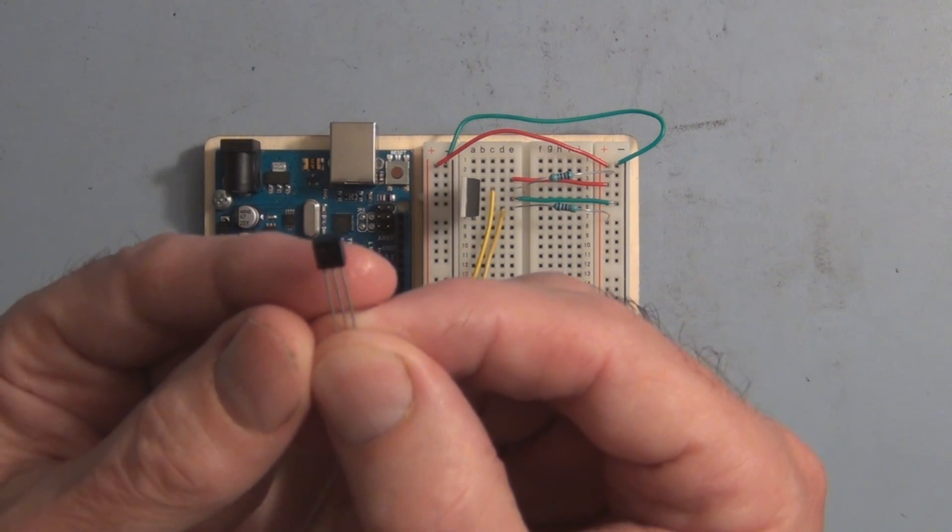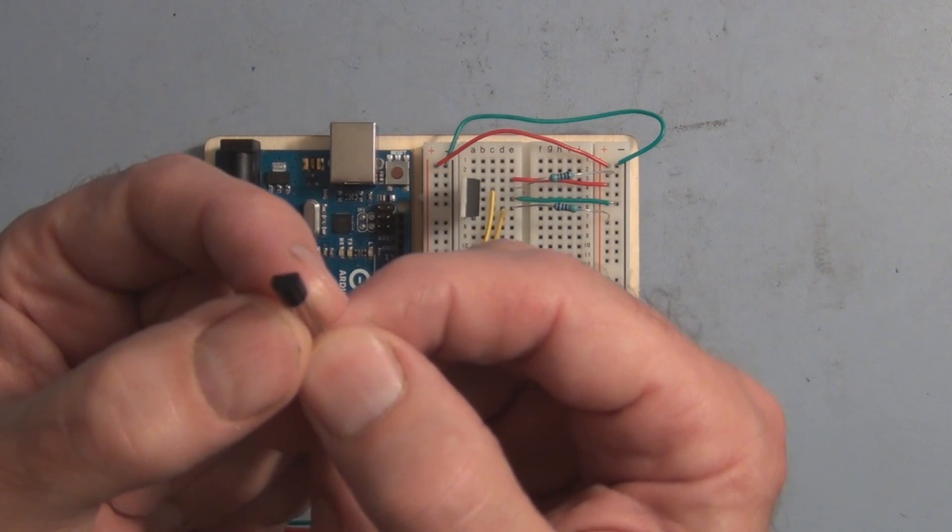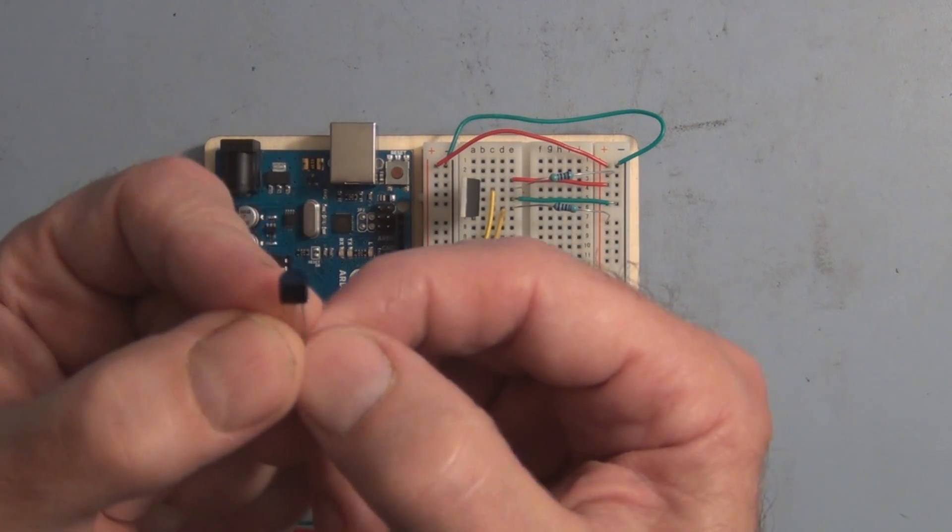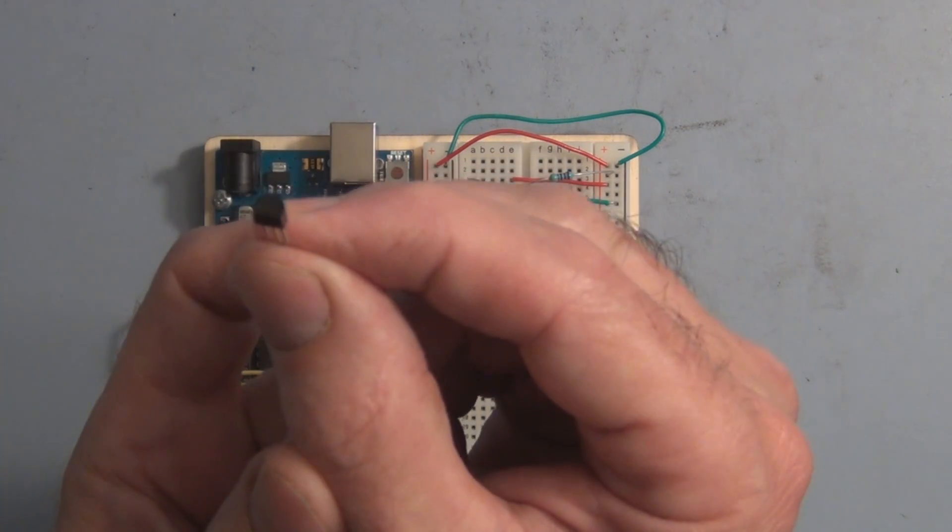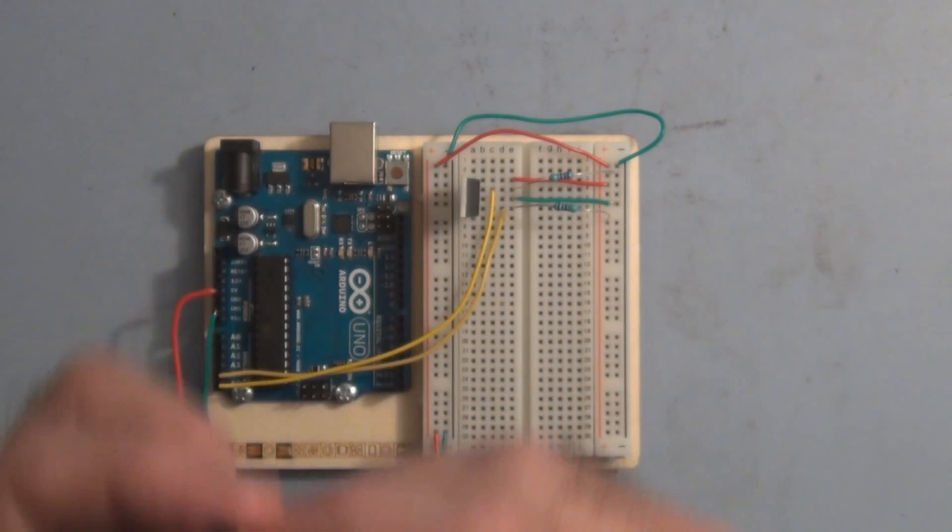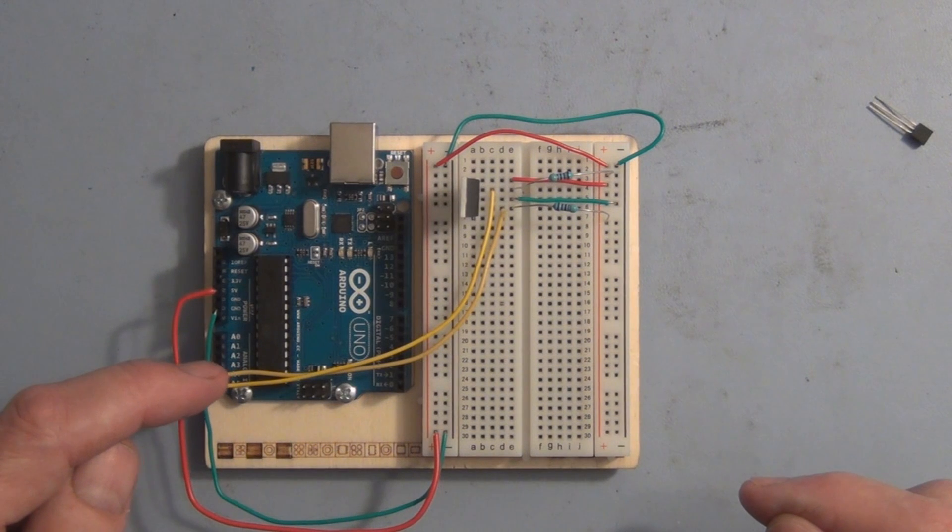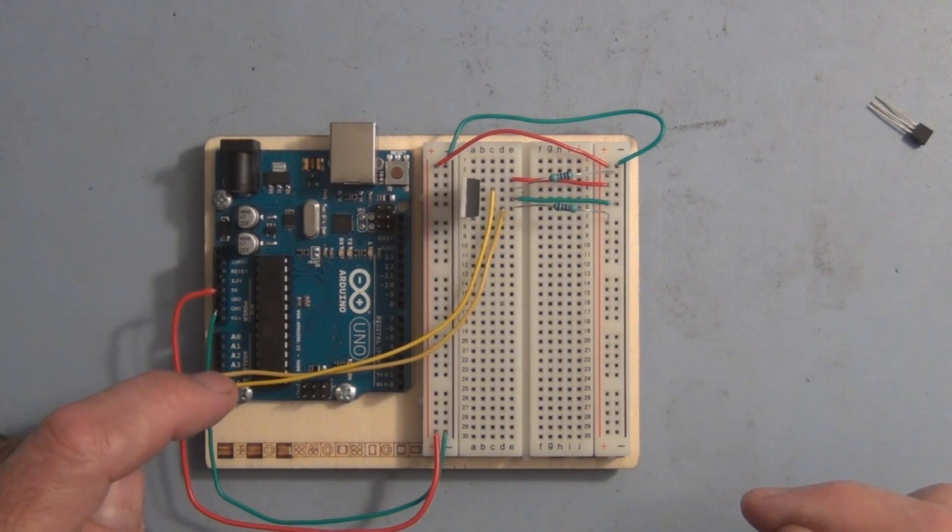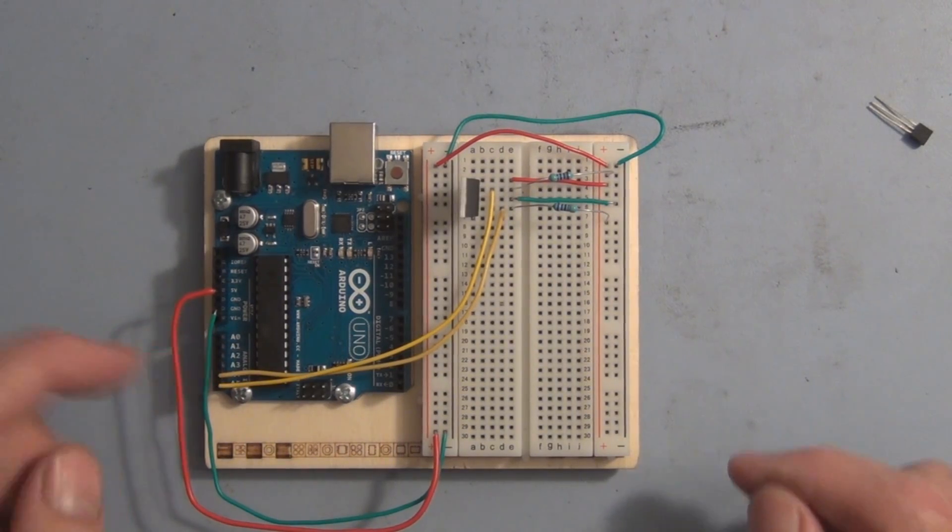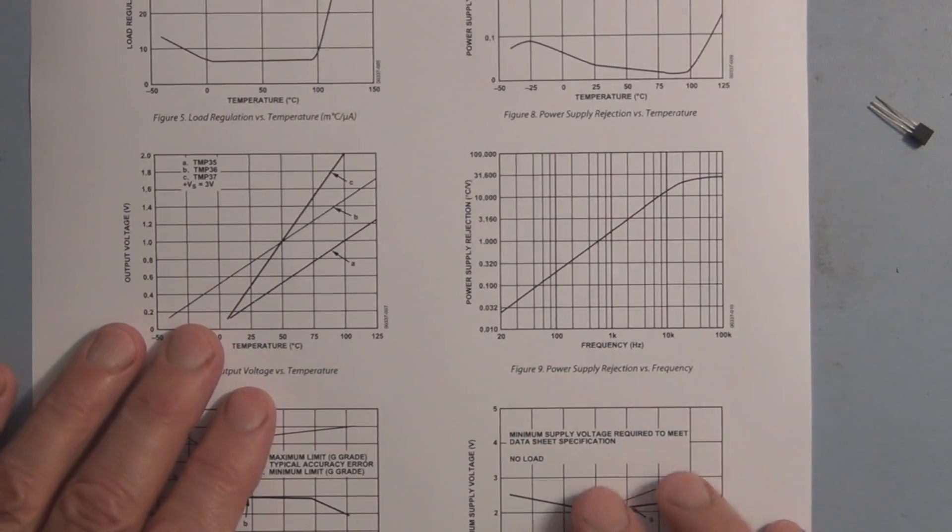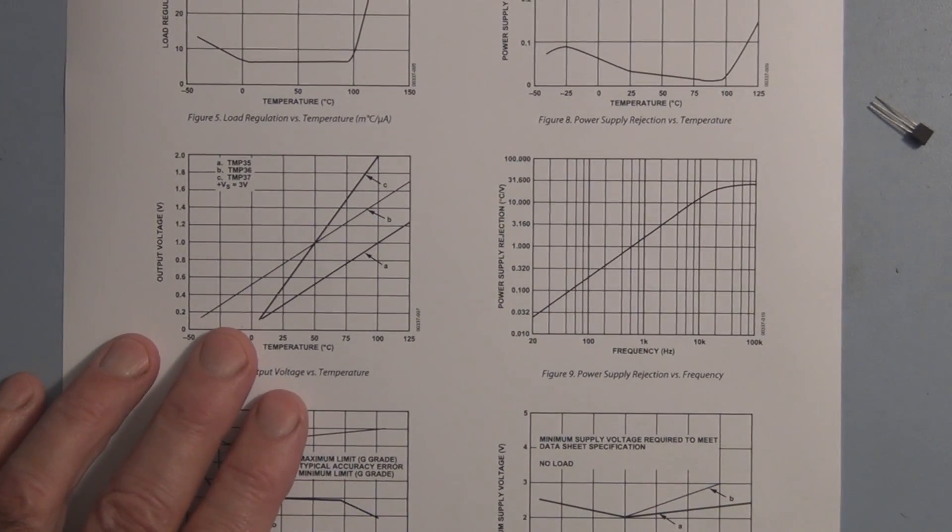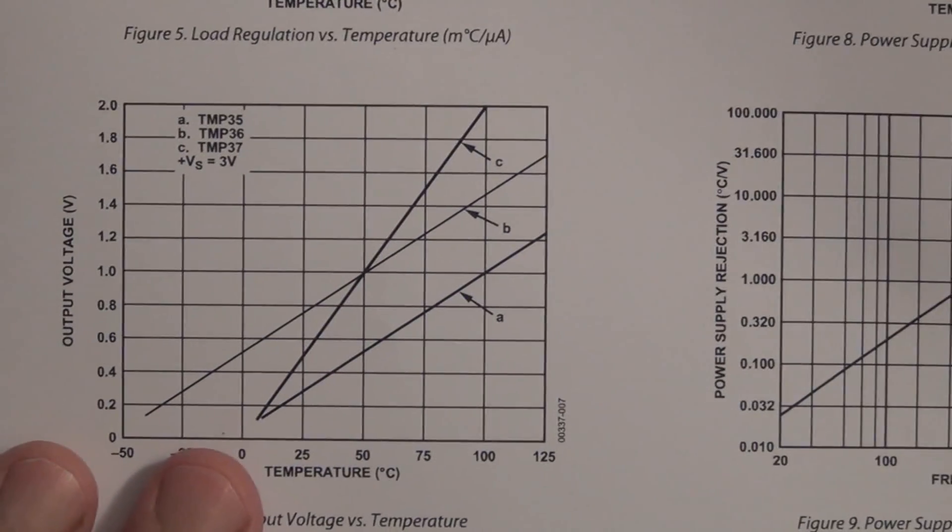It's an analog device and it produces an output voltage that's proportional to the temperature that it's measuring or the surrounding temperature. We fed that output voltage directly into one of the Arduino Uno analog inputs along here, A0 through A5, and I've got the graph here showing the output voltage with respect to the temperature for that device.